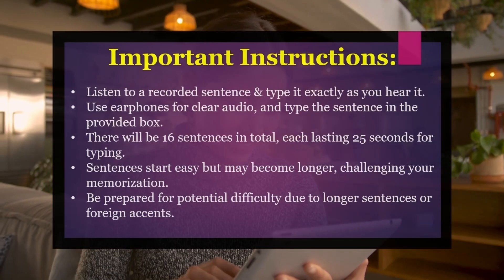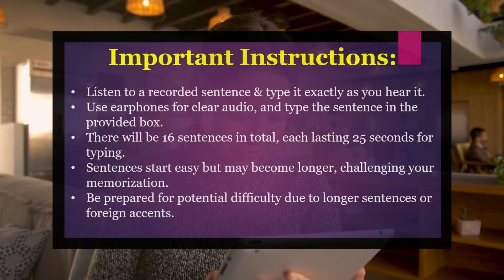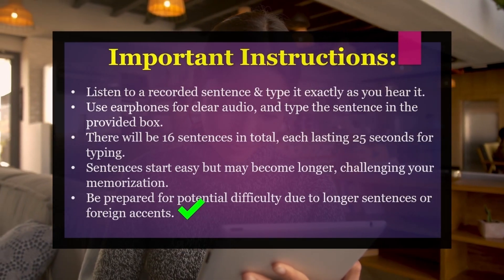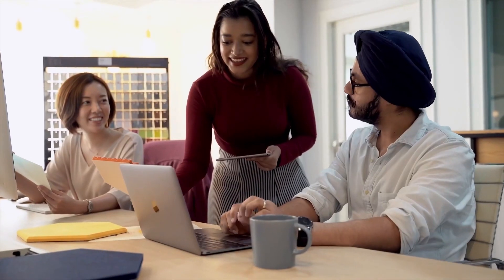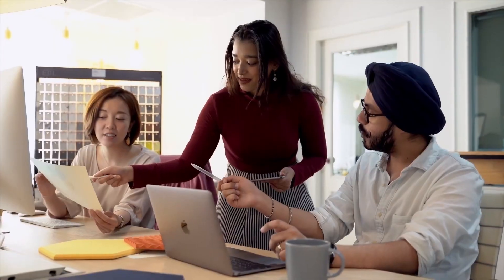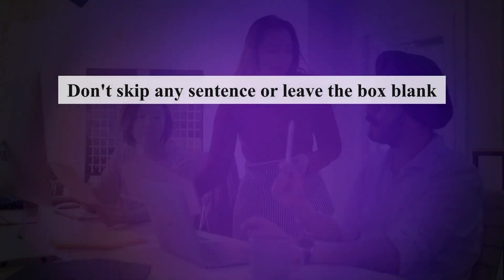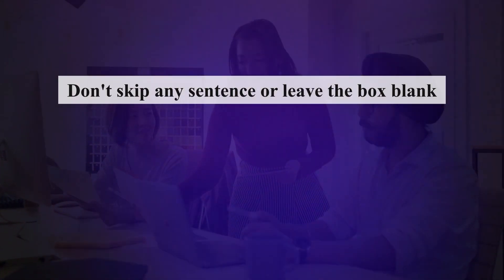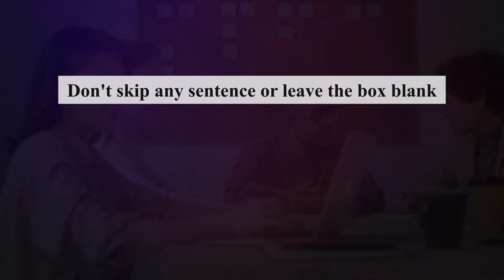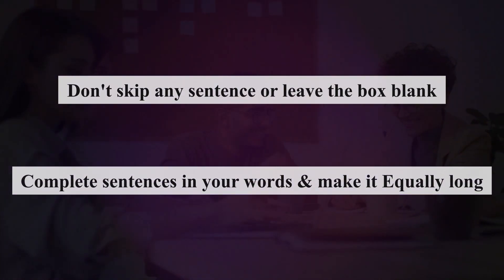But slowly and gradually, sentences will become longer and it may become difficult to memorize the entire sentence. There could also be a situation where you might not be able to understand the sentences due to a foreign accent — British or American. As with the previous section, you must not skip any sentence or leave the box blank. Leaving a section blank means getting negative marking. You must attempt the sentence and try to complete it in your own words if you could not fully understand the actual sentence.